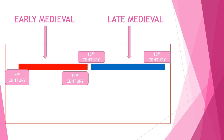In the early medieval period, the Palas, Pratiharas, Rashtrakutas, Cholas, and Rajputs were dominant forces. In the later medieval period, it starts with the establishment of the Delhi Sultanate and extends till the reign of the Mughals.